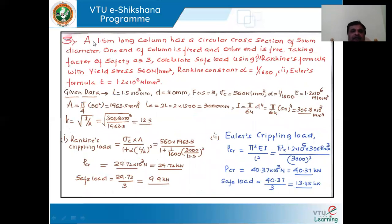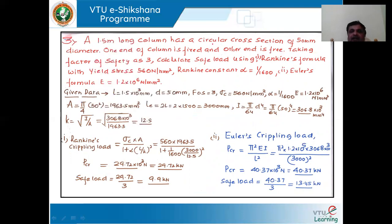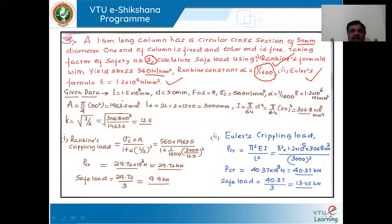Coming to another important problem. A 1.5 meters long column has a circular cross section with a diameter of 50 mm, and one end of the column is fixed and the other end is free. Taking a factor of safety as 3, calculate the safe load using Rankine's formula when the yield stress is 560 newton per millimeter squared and the Rankine's constant is 1 by 1600. Second, find the safe load using Euler's formula for which Young's modulus is 1.2 into 10 to the power 6 newton per mm squared. So first let us write the given conditions.